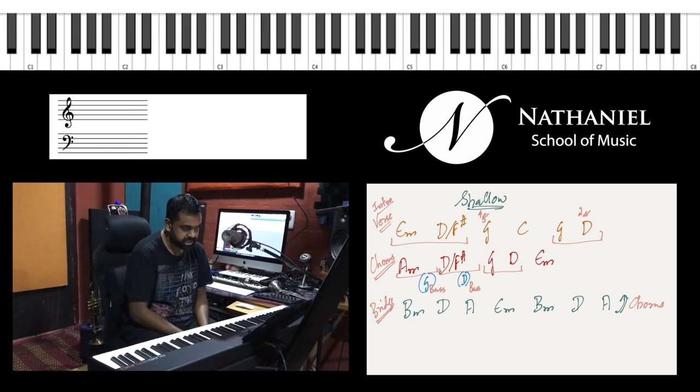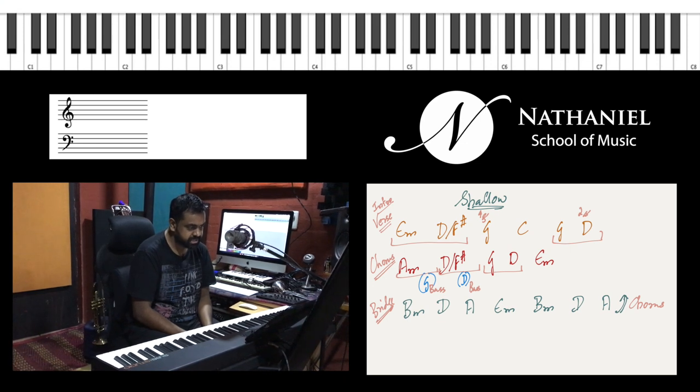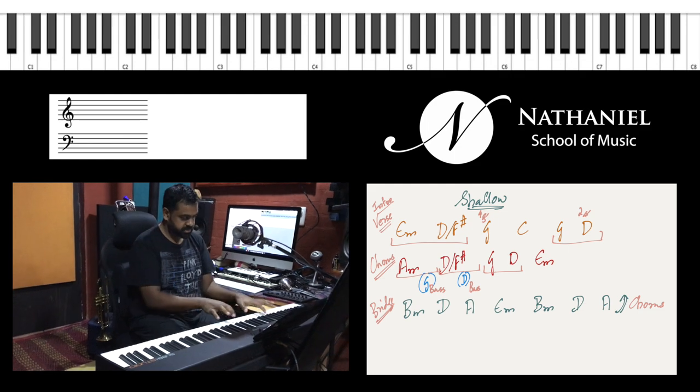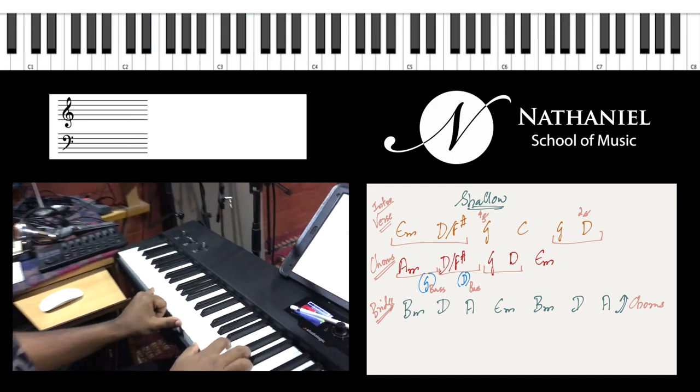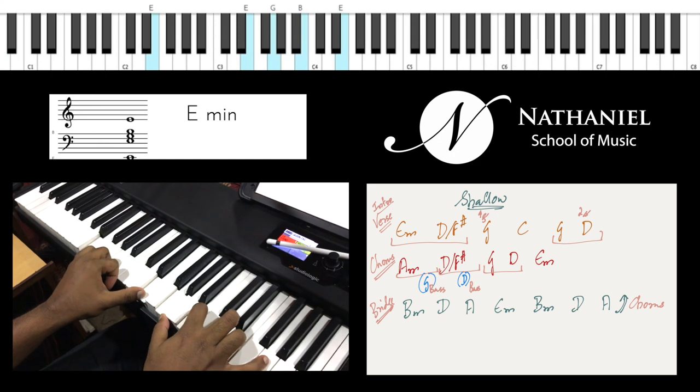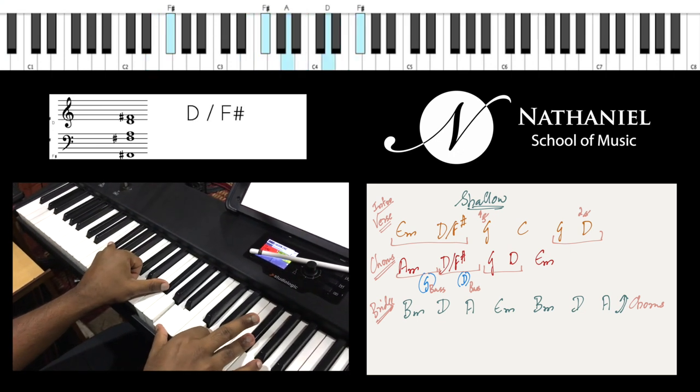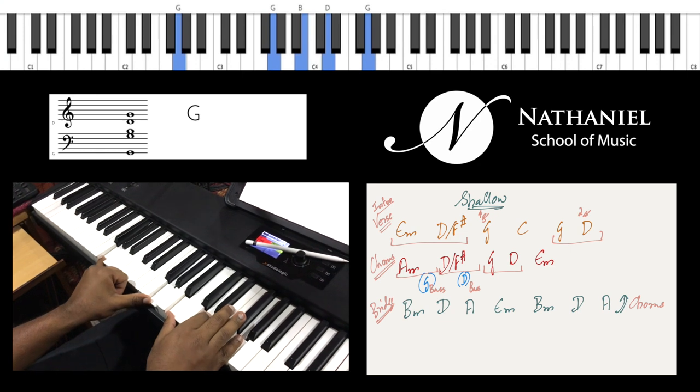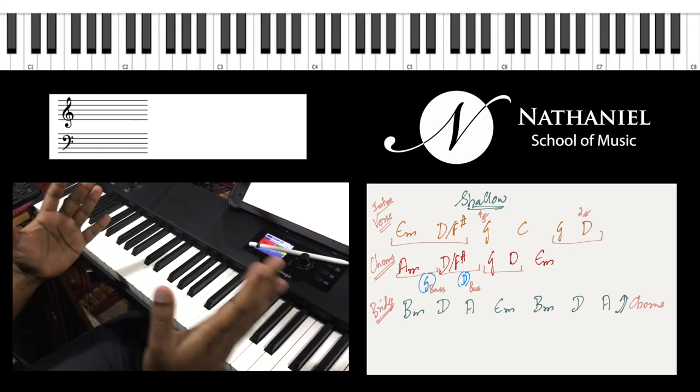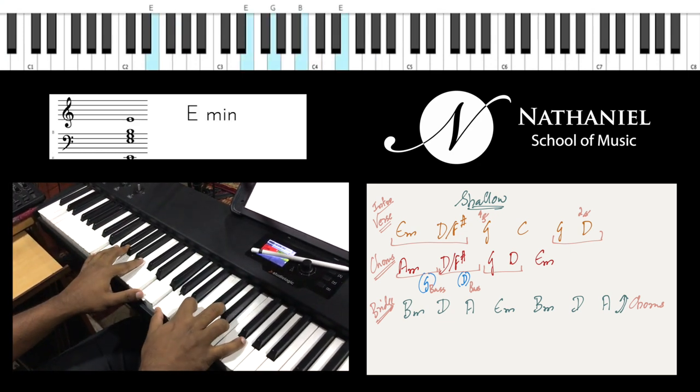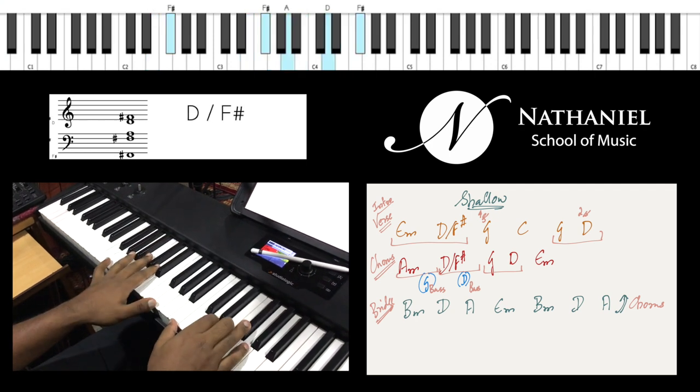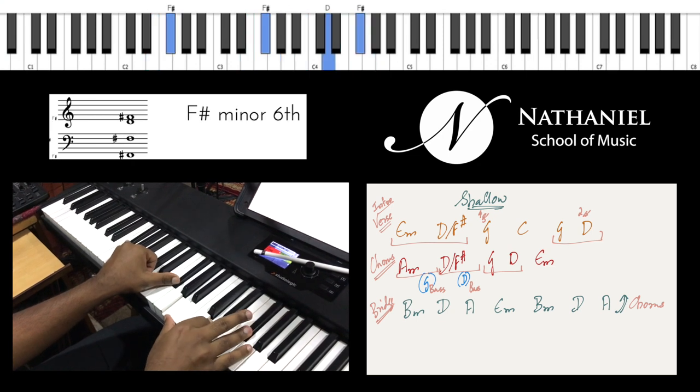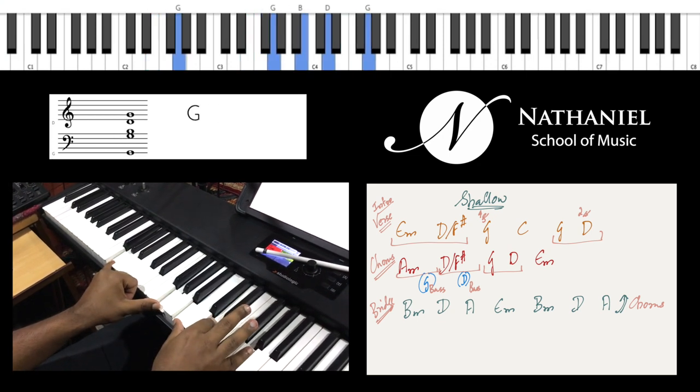So let's first go through the chords and then look at some of the timing information and the rhythmic information. So the verse of the song basically goes E minor, D with F sharp bass and G major. That's the first half. So if you have to divide it into 2. So E minor, D with F sharp and G major.